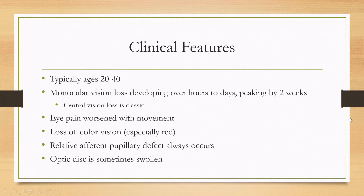The typical presentation is a woman in her 20s to 40s who will have monocular vision loss that develops over the span of hours to days and peaks by two weeks. If the vision loss is still progressively worsening after two weeks, consider an alternate diagnosis. The vision loss can be central, such as a central scotoma, or can involve any visual field.